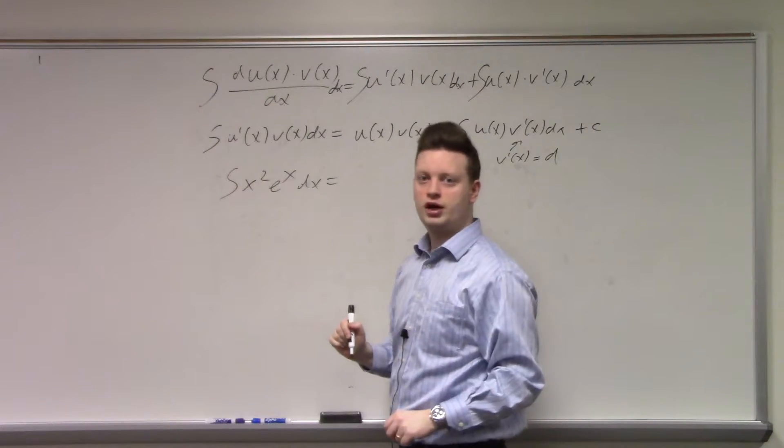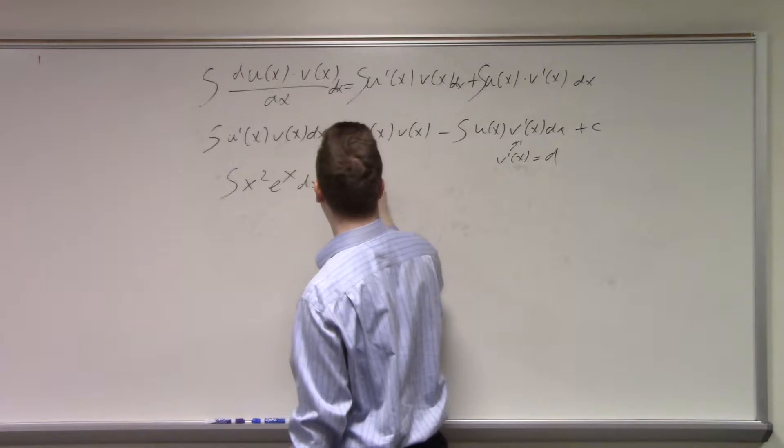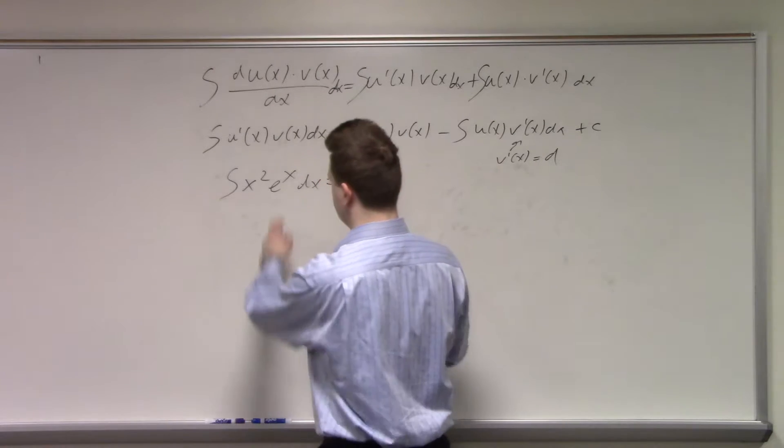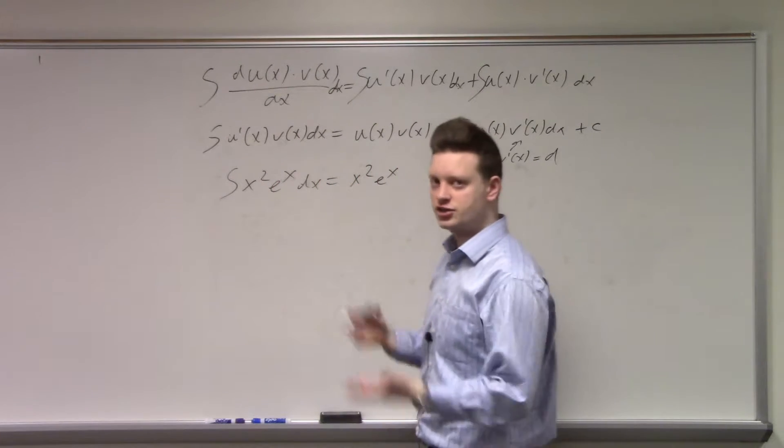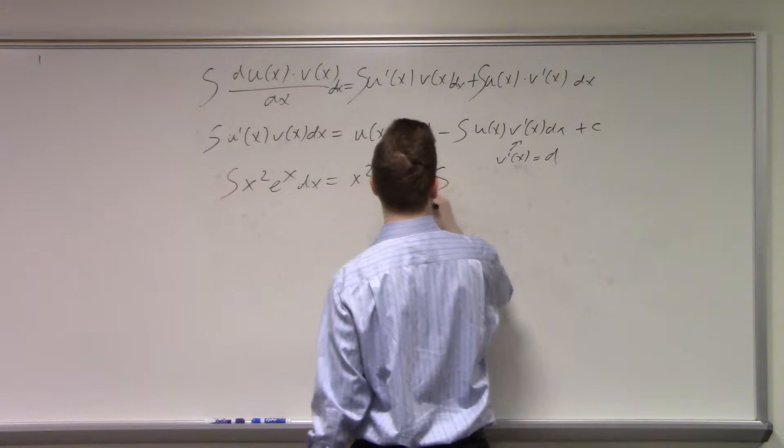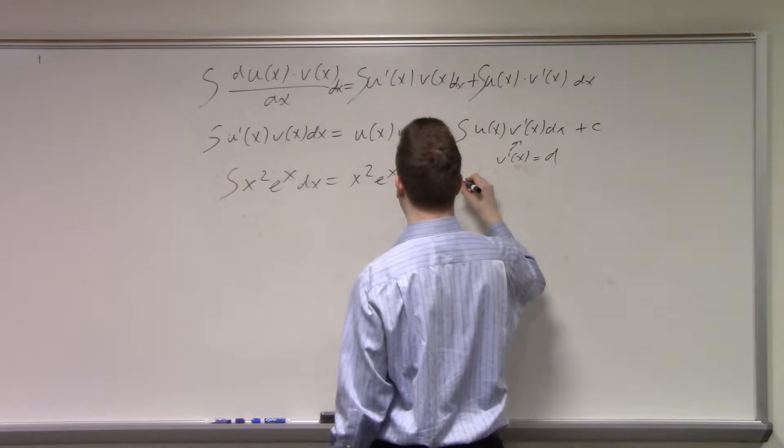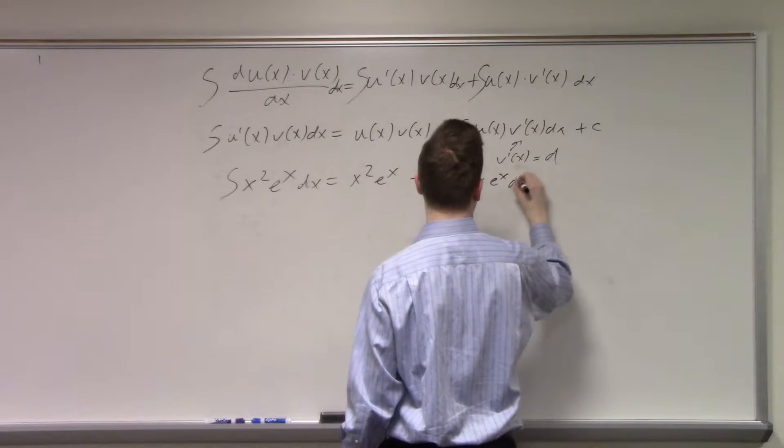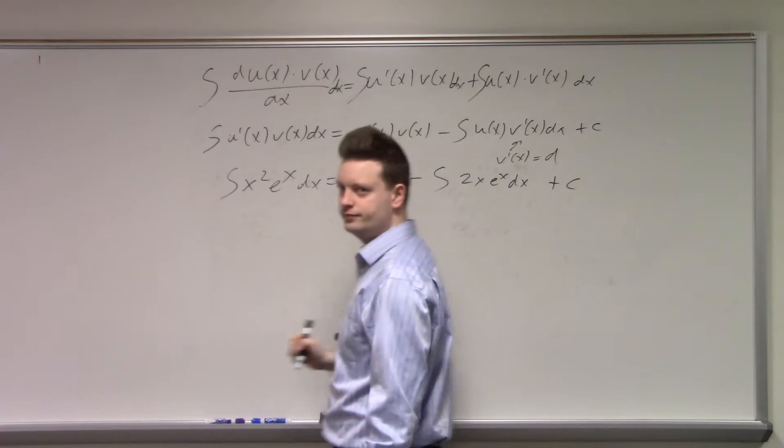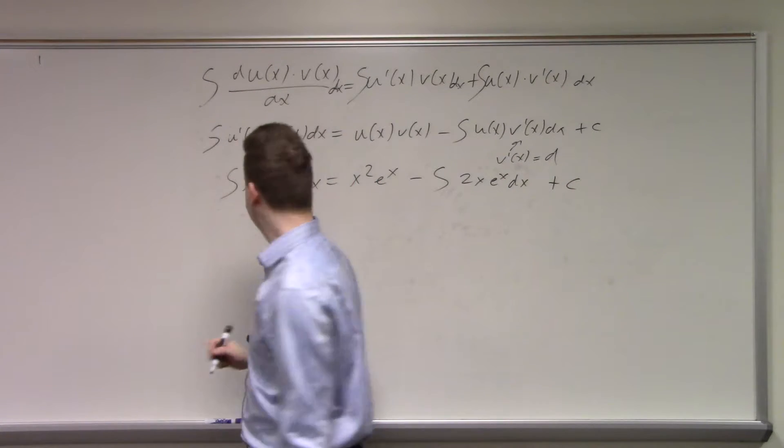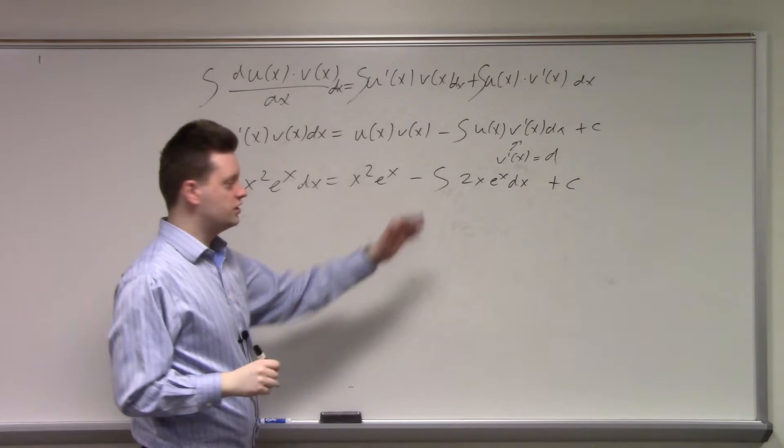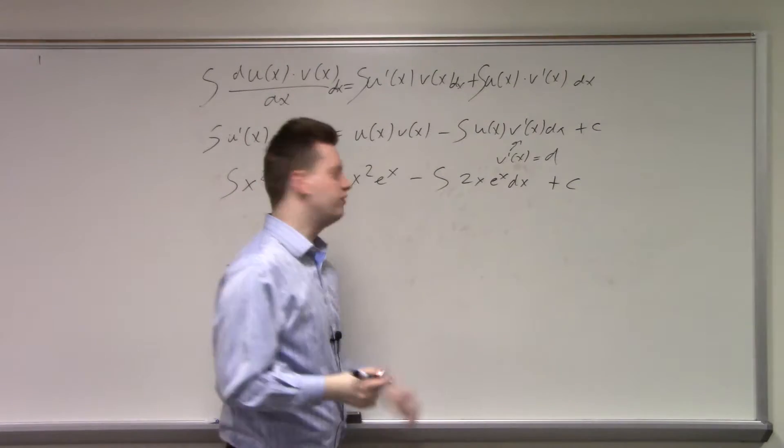So x² is our v, so we get x² e^x, because integrating and differentiating e^x always gives us the same, minus the integral of 2x e^x dx plus a constant. Never forget the constant. Now we need to do it a second time, because we haven't simplified that yet.